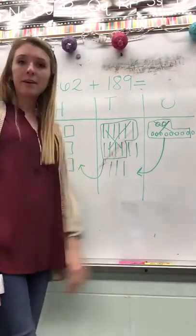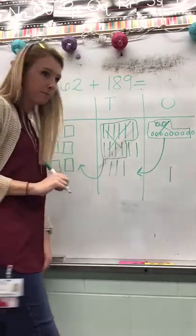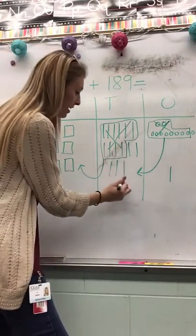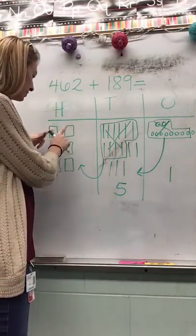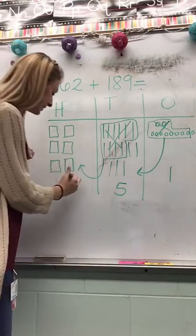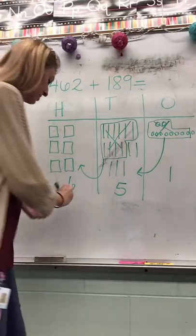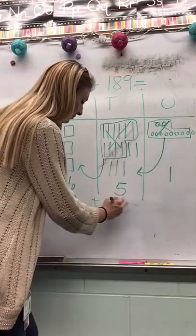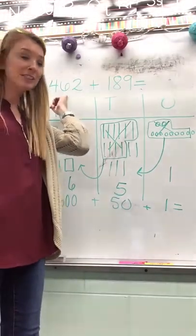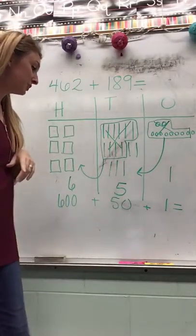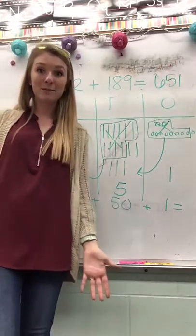Now I can officially count how many I have. So I know I have one one. I have one, two, three, four, five tens, which would be equal to fifty. And I also have one, two, three, four, five, six hundreds, which would be equal to six hundred. So now I see that my number is six hundred plus fifty plus one. So the sum of 462 plus 189 is 651. Please let me know if you have any questions.